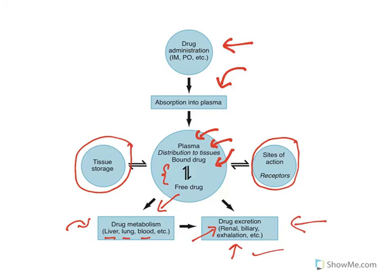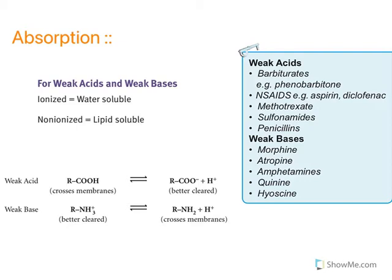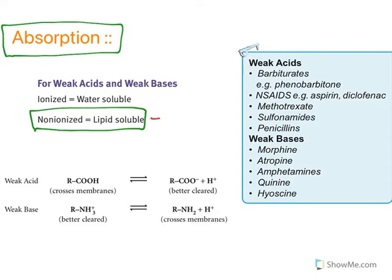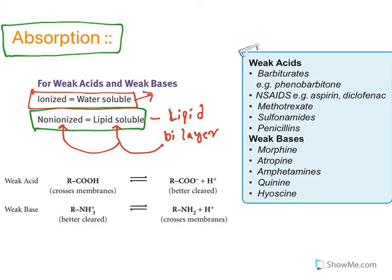Now the first aspect in detail: absorption is the drug getting into the blood plasma. Non-ionized, lipid-soluble drugs will get absorbed because biological membranes contain a lipid bilayer — our cell membranes are made up of lipid bilayer. So lipid-soluble or non-ionized drugs will be absorbed, whereas ionized, water-soluble drugs will have limited absorption. Most of the drugs we take are either weak acids or weak bases. Weak acids in their non-ionized state are lipid-soluble and can cross membranes to get absorbed.